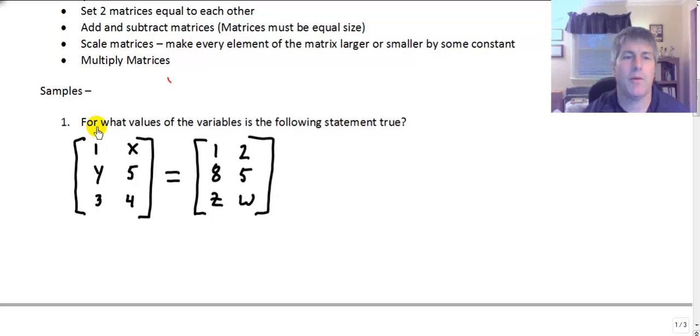So this might be a sample problem that we have. For what values of the variables is the following statement true? So we have two matrices here. I didn't name them. We can call them matrix A and matrix B. And we're saying that matrix A is equal to matrix B. So when we line things up, element A11 and element B11 here, they're in the same location in those matrices. So 1 is equal to 1.